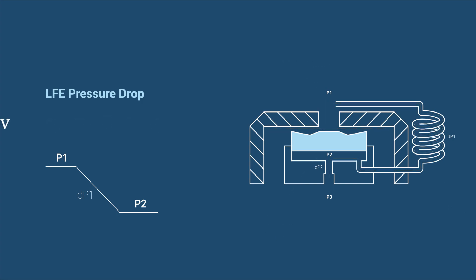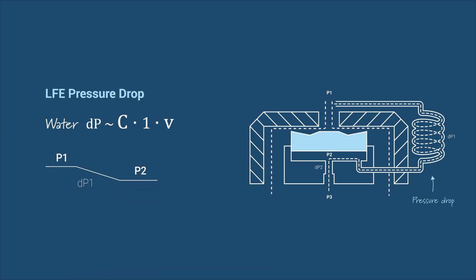Let's see what happens when water starts flowing through the valve. Water has a viscosity of 1 cp, meaning that the pressure drop in the LFE will be 7 times lower than for the oil, resulting in a higher P2 pressure.